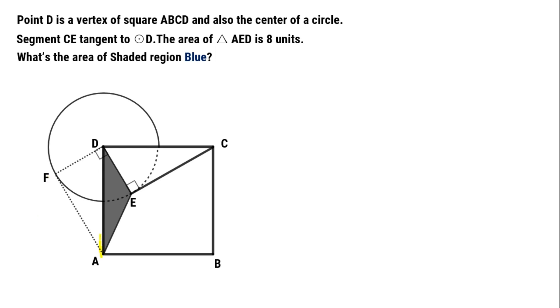Let's focus on triangle ADF and triangle CDE. Because DE and DF are both radii of the same circle, DE equals DF. DC and DA are both sides of the same square, so DC equals DA.